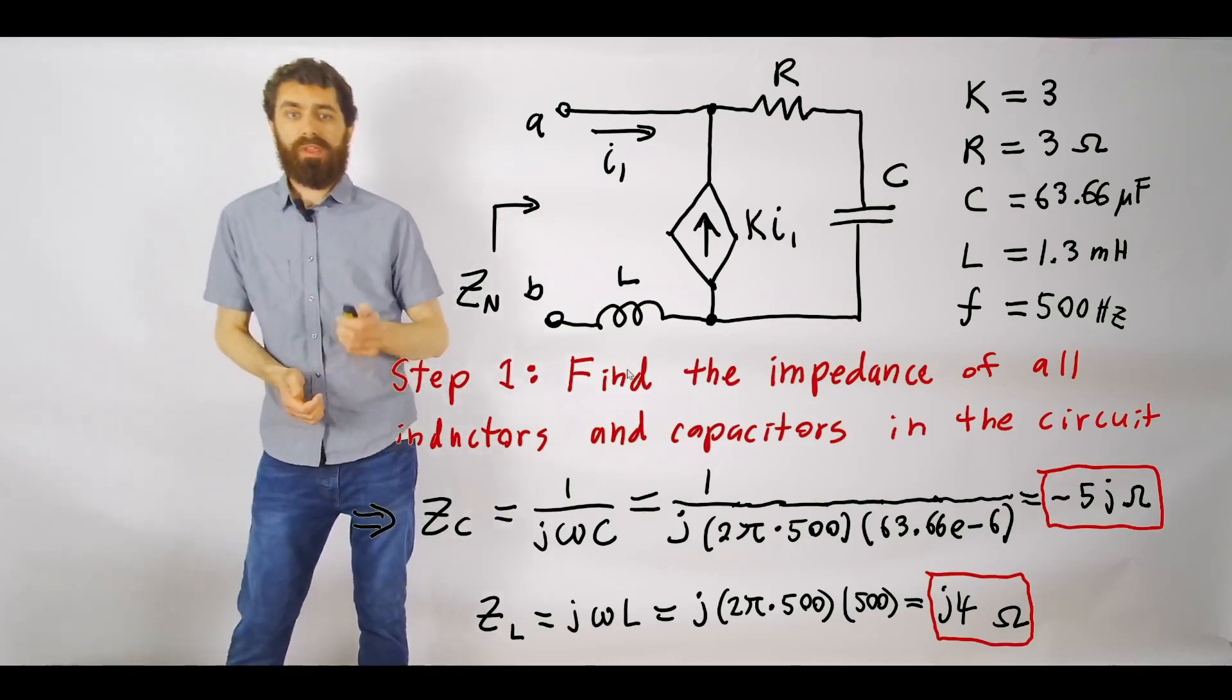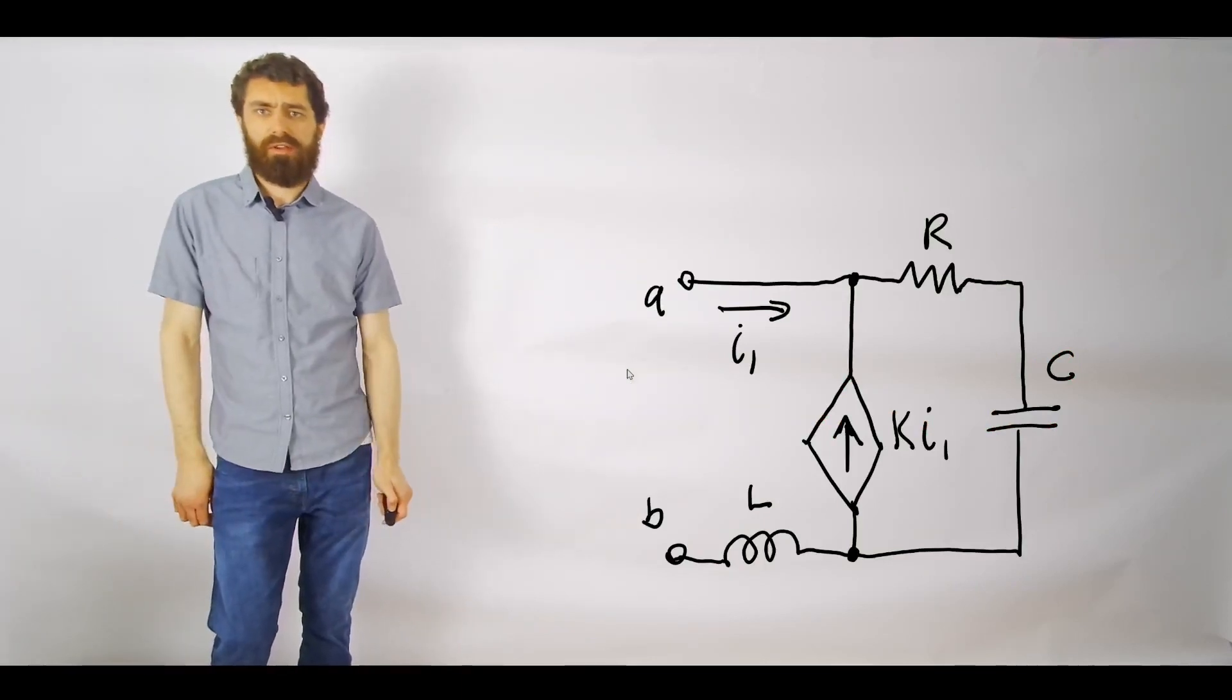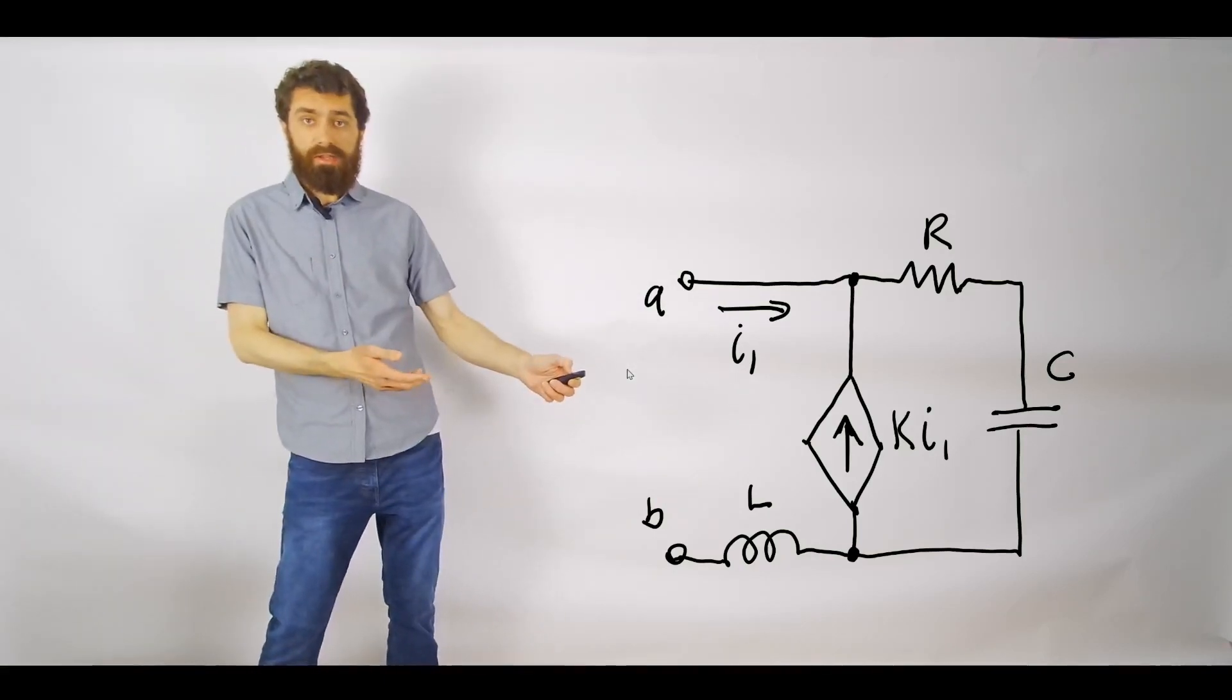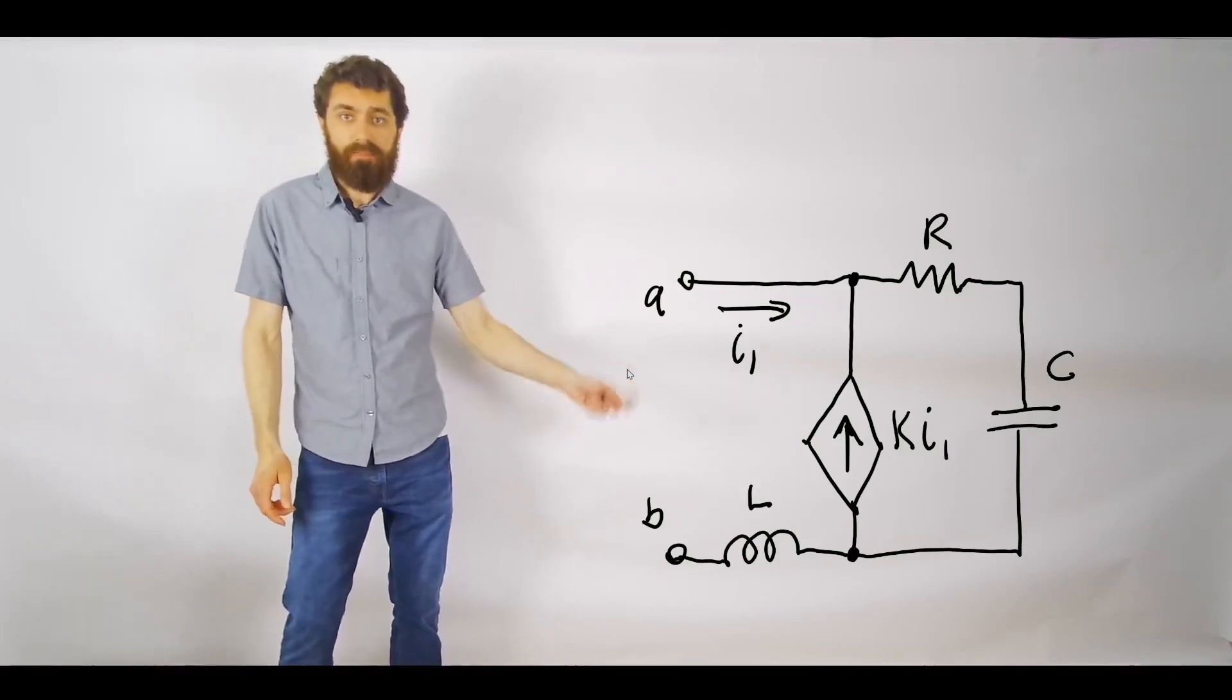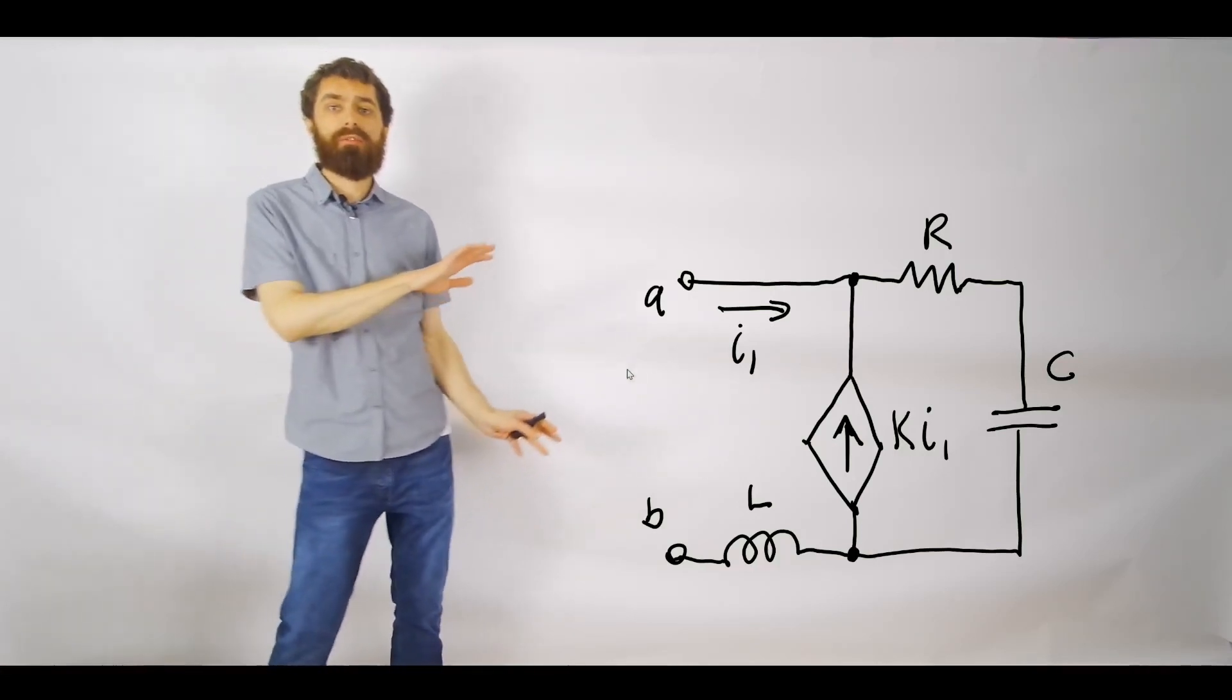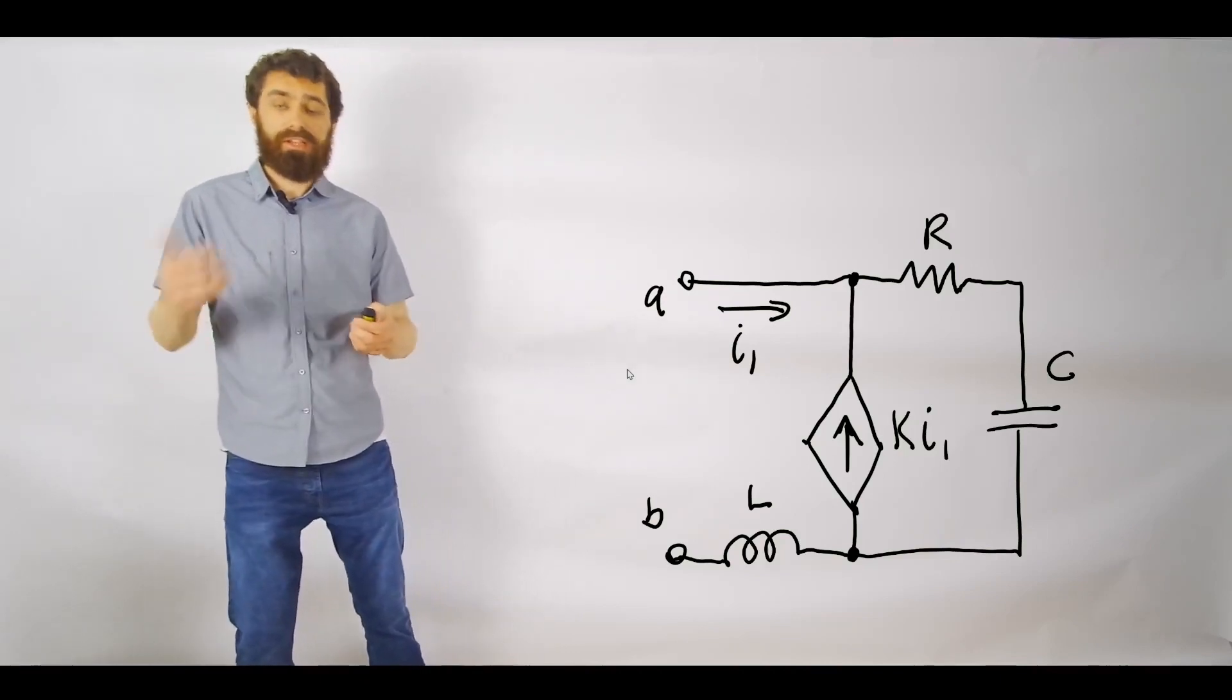The next step then is to solve it just like you would any other DC analysis circuits problem. We're going to find the Norton equivalent here. We can see that we only have dependent sources, which means in order to find the Norton impedance, we've got to attach a test voltage source and find the ratio of the test voltage source and test current.